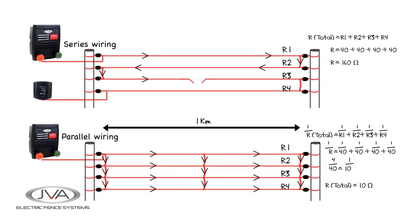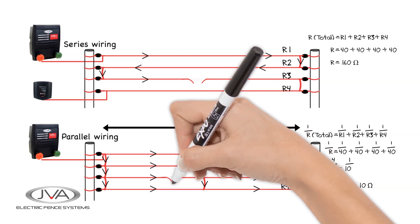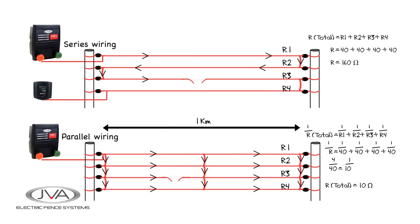Parallel wiring is generally used on agricultural and wildlife fences where longer distances are required. If a strand is broken, it will not affect the integrity of the fence. A combination of parallel and series wiring can be used on the same fence line, should one want to do a longer distance but also incorporate security.